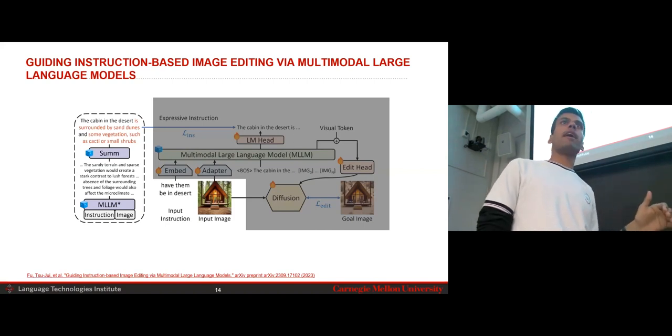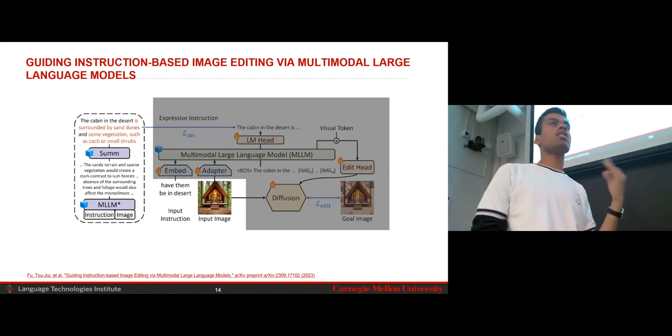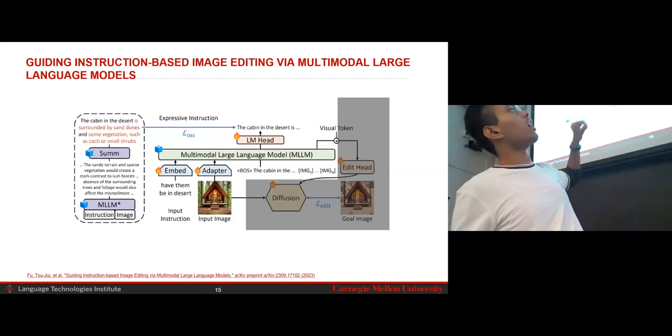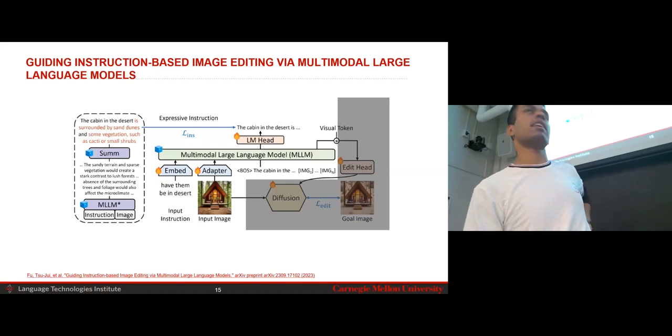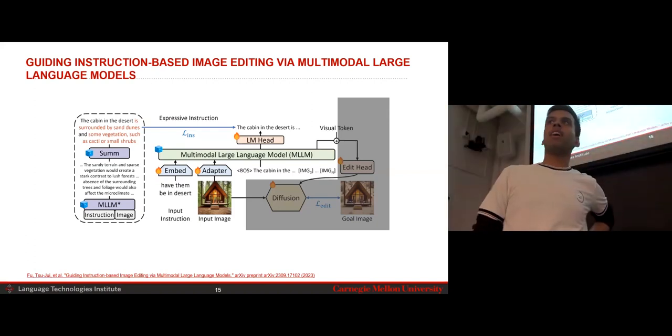Because humans will always just provide short and succinct. It's the job of the MLLM to provide details for the same. So that's why the first component of this is that we're using a frozen MLLM to generate more details given the input instruction and the image. So the instruction, as you can see, would be, we add, for example, the sandy terrain and sparse vegetation would create so on and so forth. So these kind of details are generated by a frozen MLLM. And it's important that we provide both the instruction as well as the image input for it to be conditioned on. So once we train this, as you can see, the output of the MLLM is still very long because providing such a long input instruction, there's chances that the model might not focus on the right aspects.